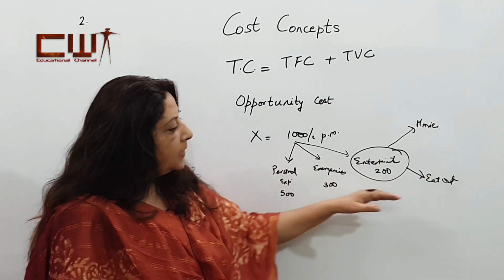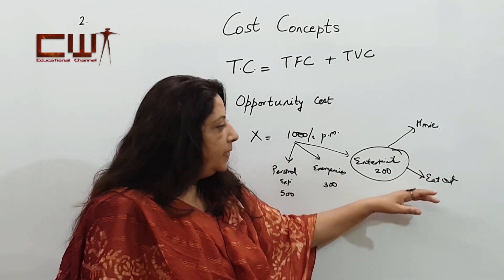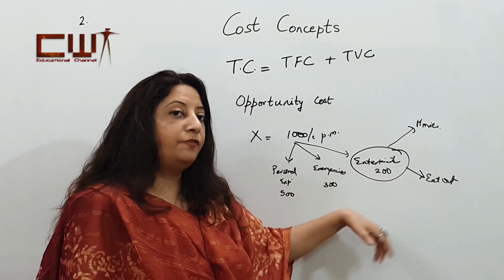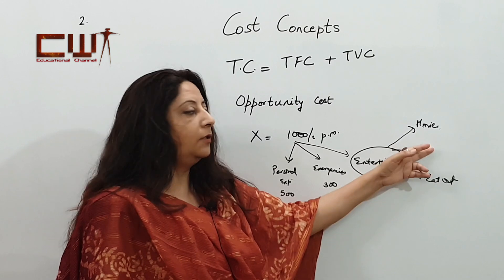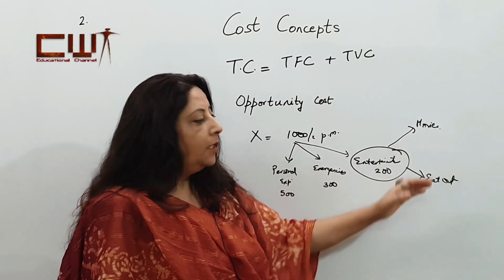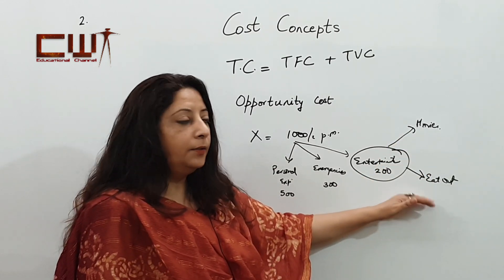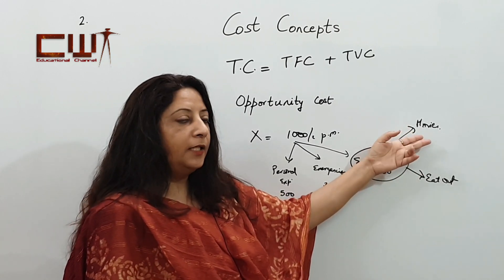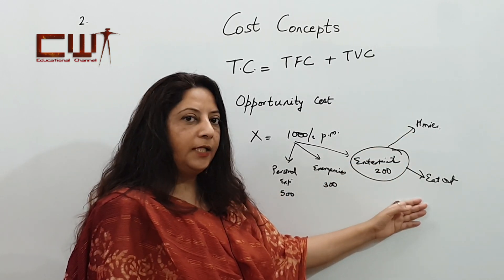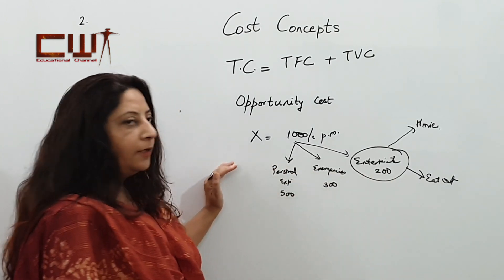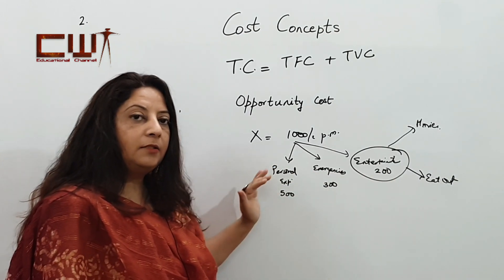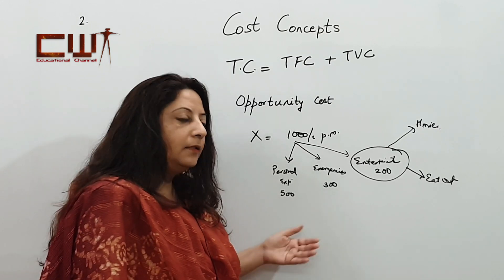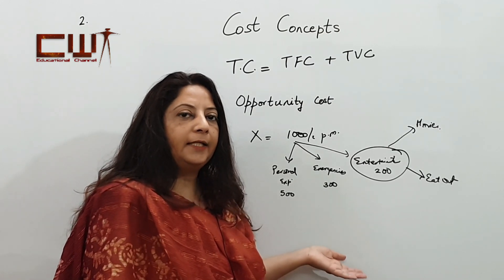Conversely, if he decides to eat out, the opportunity cost is the cost of seeing a movie. So the opportunity cost for eating out is the cost of seeing a movie, and the opportunity cost of seeing a movie is the cost of eating out. Opportunity cost is the next best alternative which is foregone by the person to make or do a certain thing.